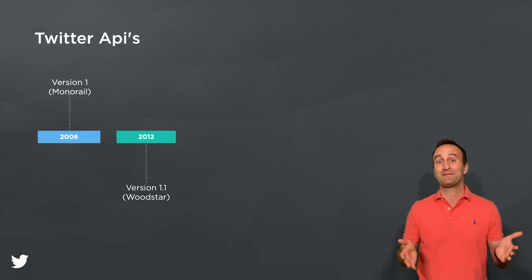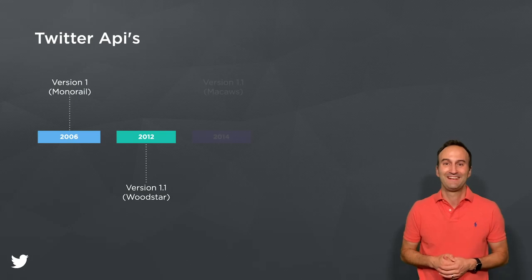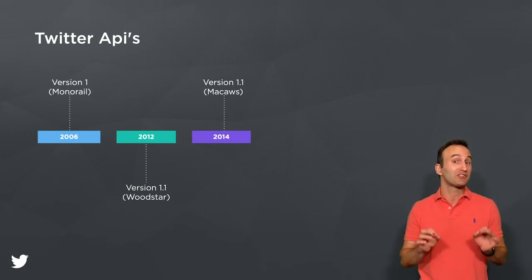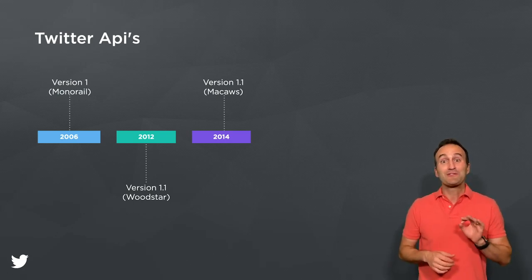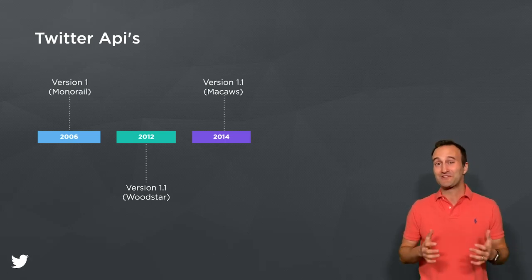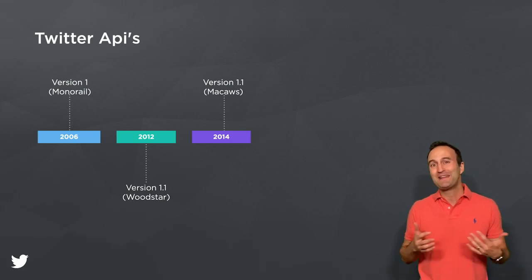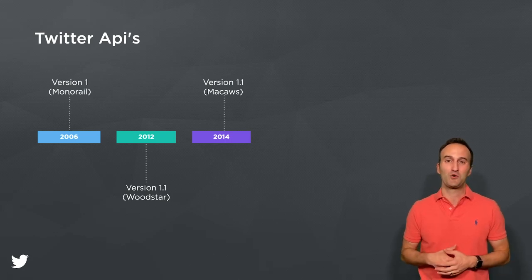The drums started beating once again — it was time for another migration. In 2014, we completed the second migration from a single WoodStar API service to a set of 14 HTTP microservices running on an internal JVM framework named Macaw. While the microservices approach enabled increased development speeds at first, it also resulted in a scattered and disjointed Twitter API, as independent teams designed and built endpoints for their specific use cases with little coordination.